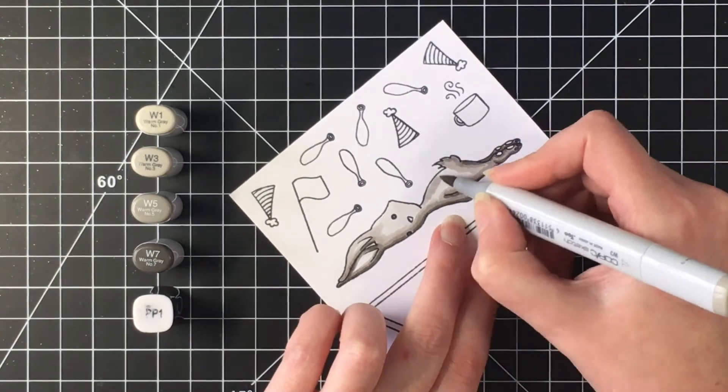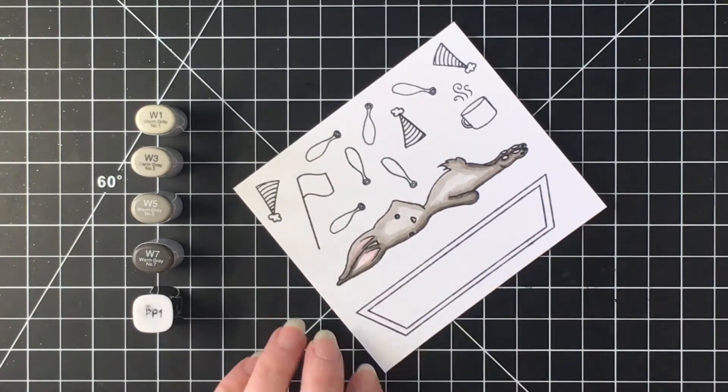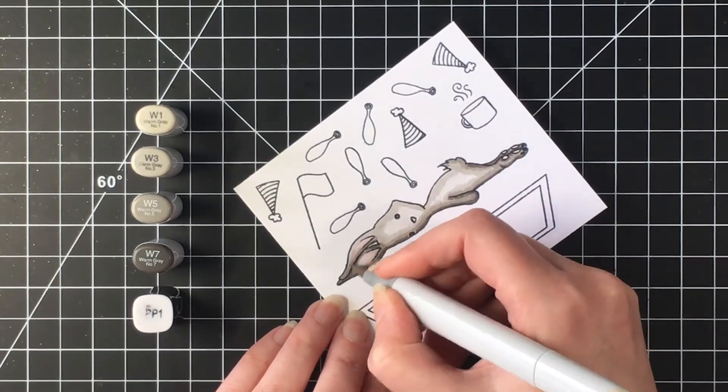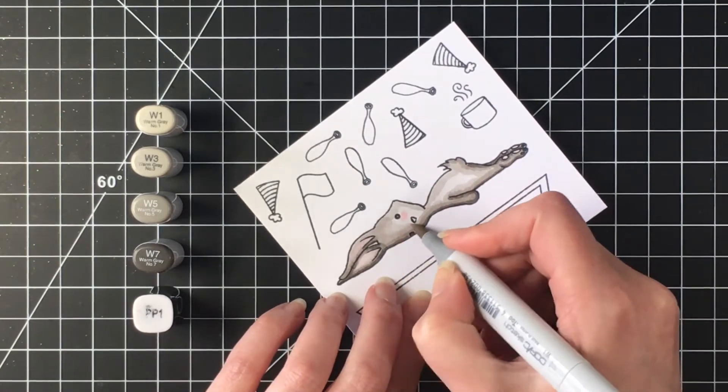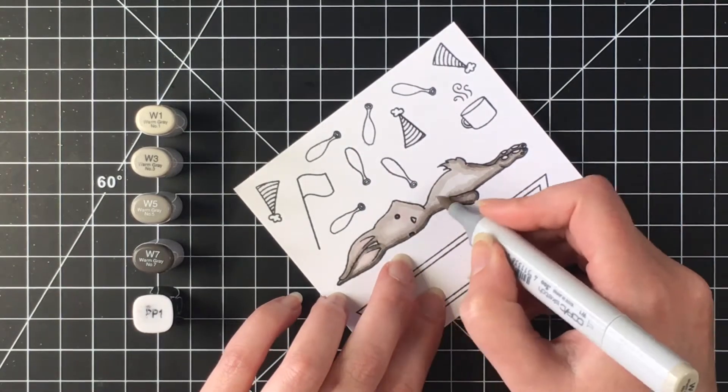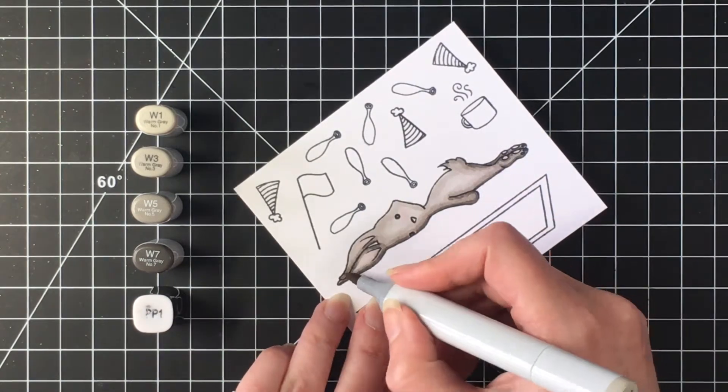I'm just using some pink for the little pads on the bunny's feet, the inside of the ears, and on the cheek and then I will finish up coloring that blending with the lightest color.